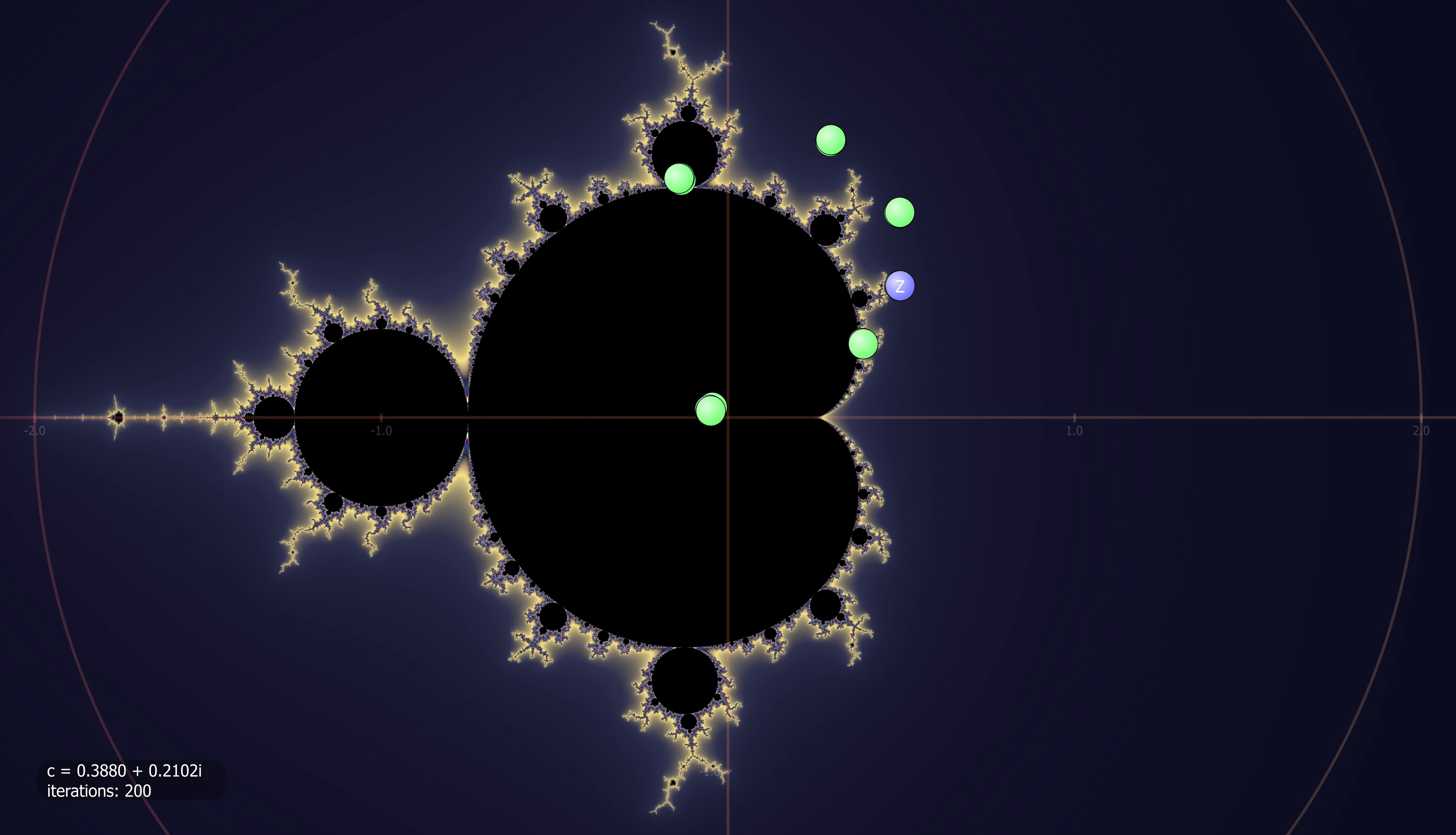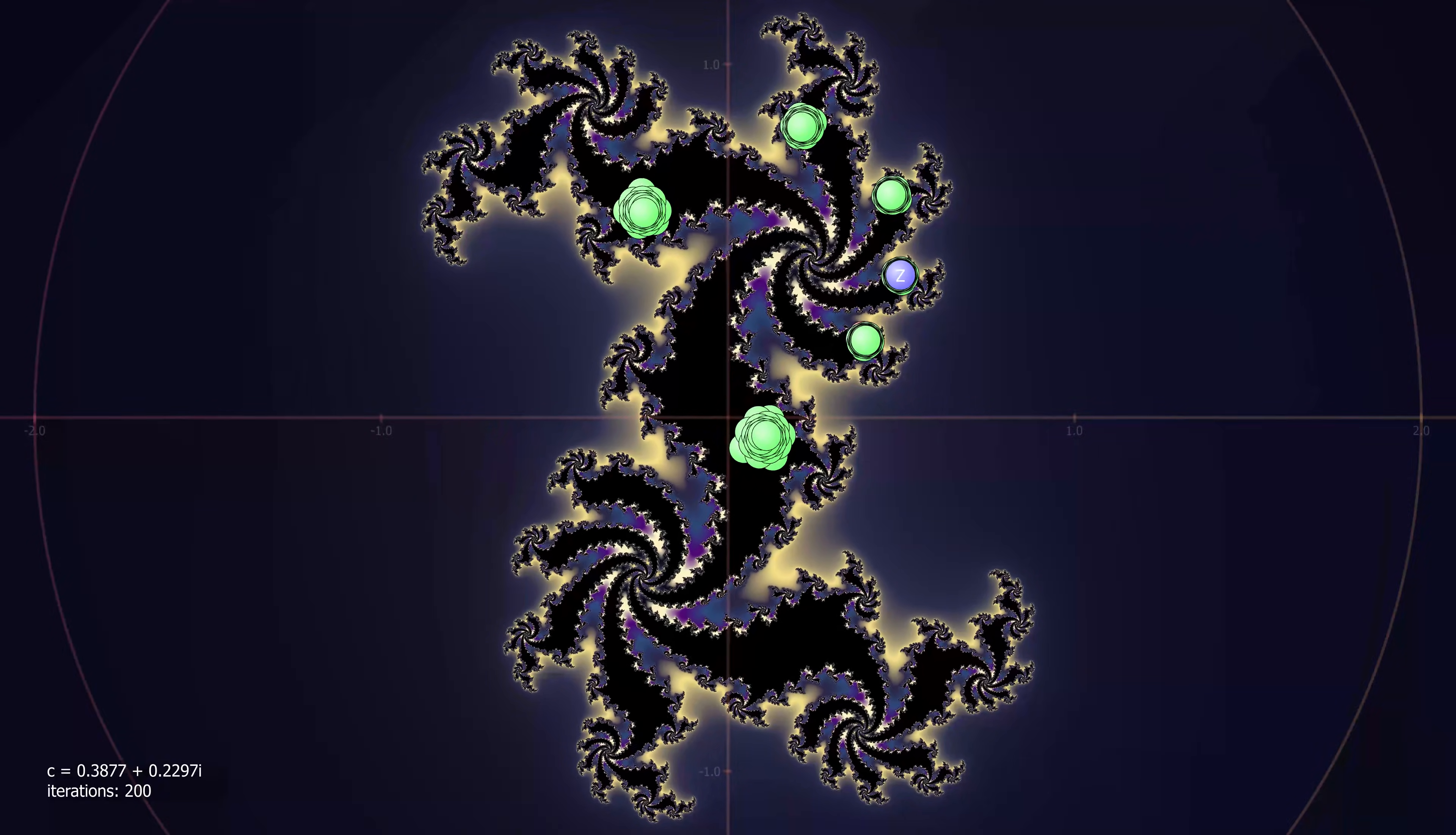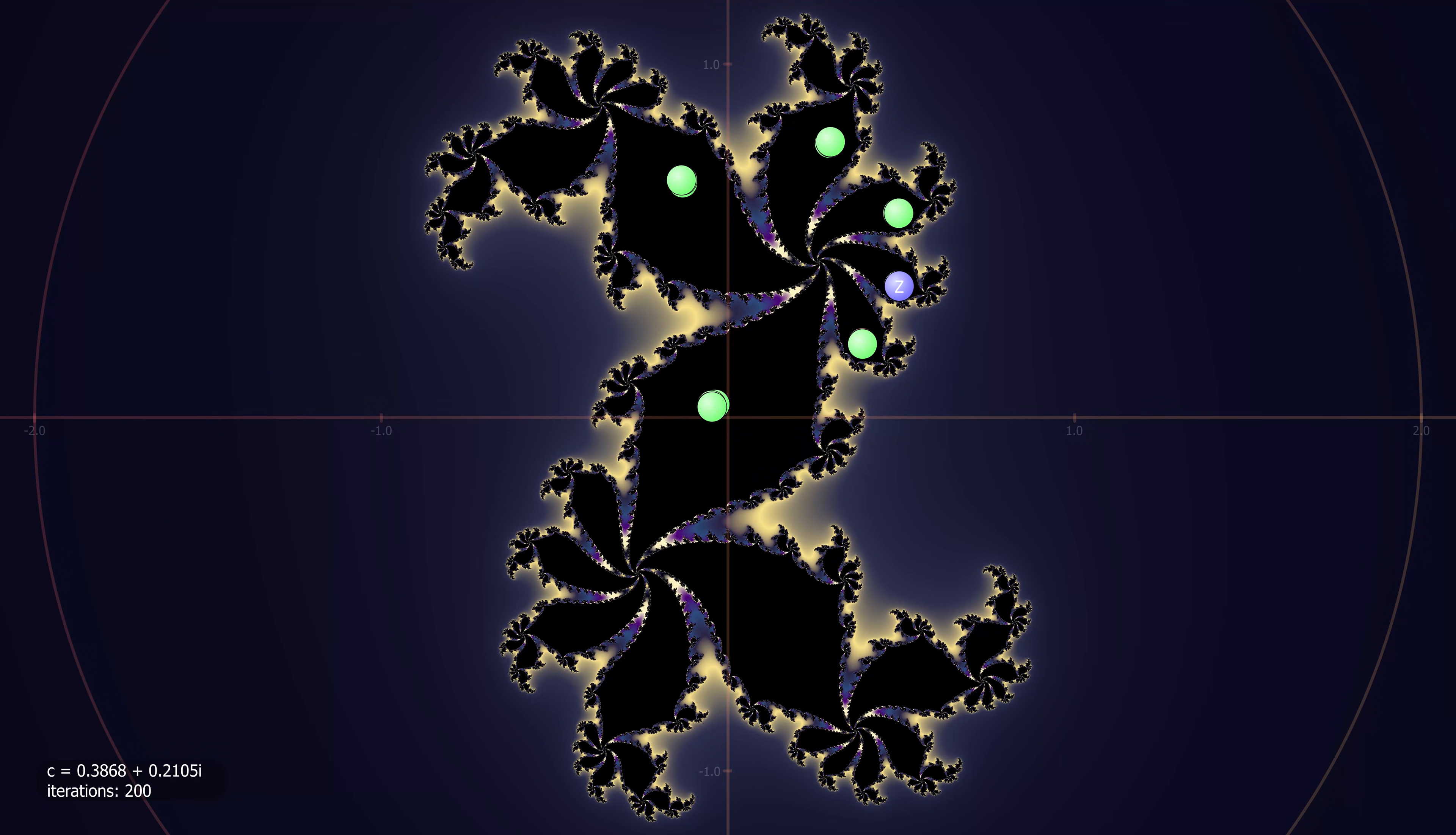The period six bulb now. Remember that C is the same over the whole Julia set. This means that the orbit must land on part of the filled Julia set to always remain periodic. Otherwise it would escape.